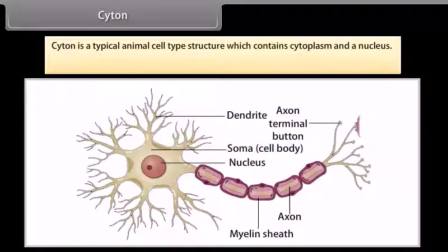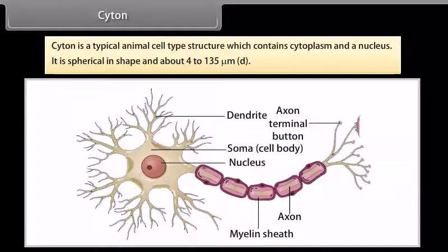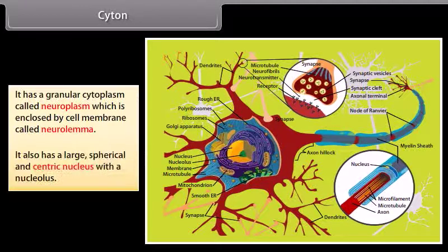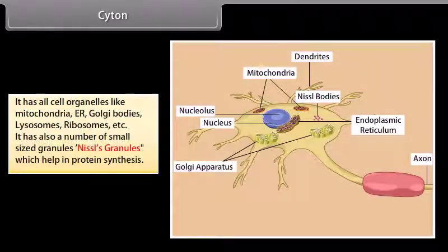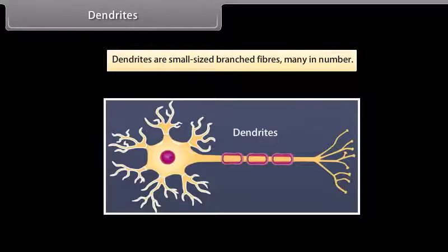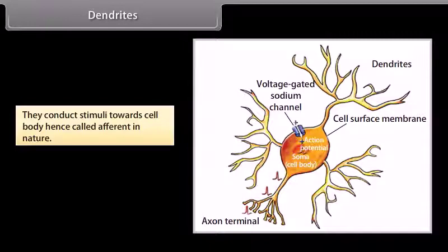The cytone is a typical animal cell-type structure containing cytoplasm and a nucleus. It is spherical in shape, about 4 to 135 micrometers. It has a granular cytoplasm called neuroplasm, enclosed by a cell membrane called neurolemma. It also has a large spherical centric nucleus and all cell organelles like mitochondria, ER, Golgi bodies, lysosomes, and ribosomes. It also has a number of small granules called Nissl's granules, which help in protein synthesis. Dendrites are small-sized branched fibers, many in number, which conduct stimuli towards the cell body — hence called afferent in nature.